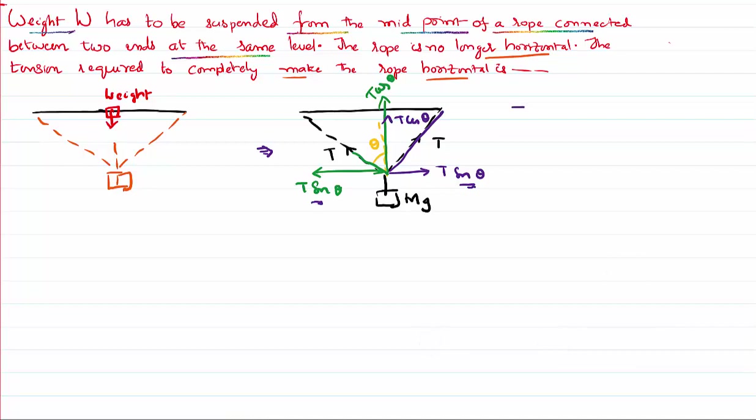Similarly, for the body to be in equilibrium, the vertical upward force acting T cos theta and another T cos theta, 2T cos theta must be equal to Mg. So I can write an equation: Tension as Mg divided by 2 cos theta.